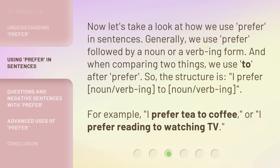Now let's take a look at how we use 'prefer' in sentences. Generally, we use 'prefer' followed by a noun or a verb-ing form. And when comparing two things, we use 'to' after 'prefer.' So the structure is: I prefer [noun/verb-ing] to [noun/verb-ing]. For example, 'I prefer tea to coffee,' or 'I prefer reading to watching TV.'